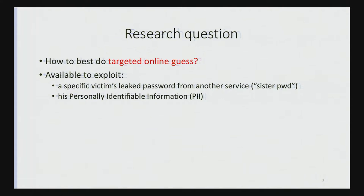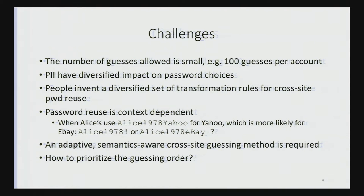The research question this collaboration is addressing is actually very simple: how to best do targeted online guessing. We are not much interested in offline guessing attacks. We want to do a very challenging attack — targeted online guessing. In order to do this attack, we are allowed to exploit a victim's leaked passwords, for example from service A. We call this a sister password or sibling password. We are also allowed to exploit some personally identifiable information of the victim — PII.